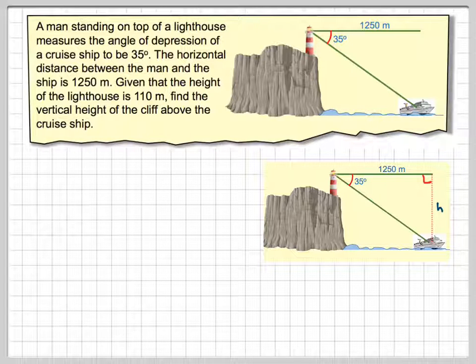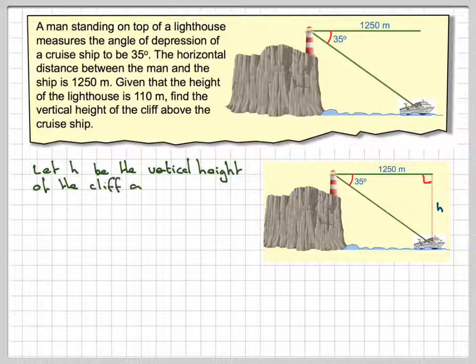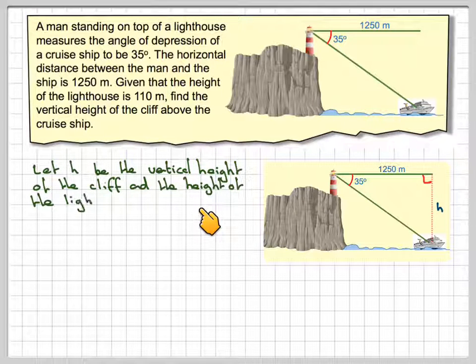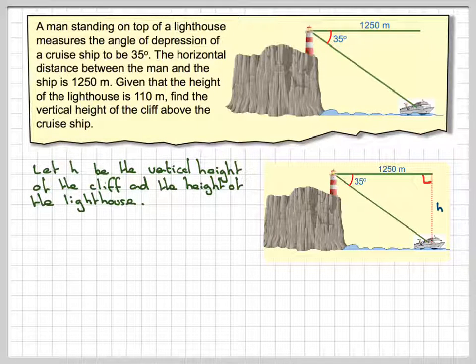Normally maybe you just draw a triangle. So first of all what we're going to try and do is calculate this height here. So let h be the vertical height of the cliff and lighthouse. Okay, so h is all of this distance here. Of course, remembering we only need to calculate this distance.